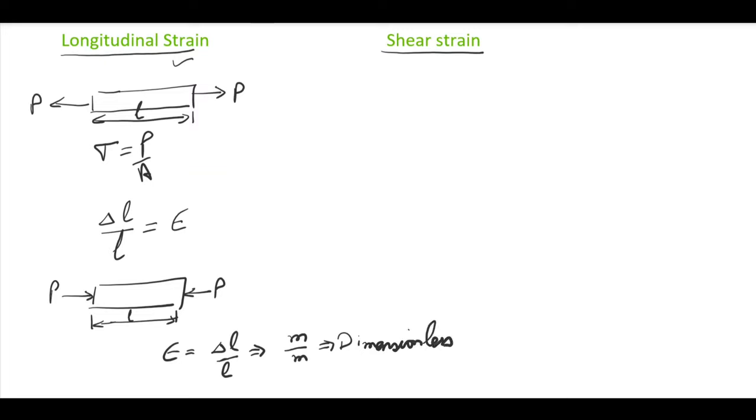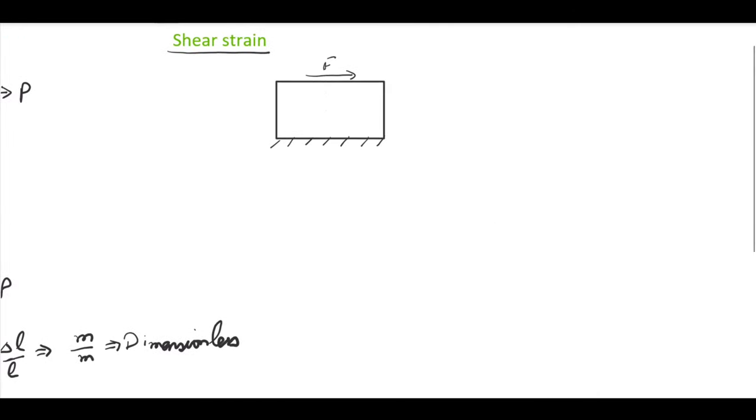Now if a body is fixed from the lower end and there is on the top a force F, this is a case of shear force. Its tendency is to tilt the body in this manner.